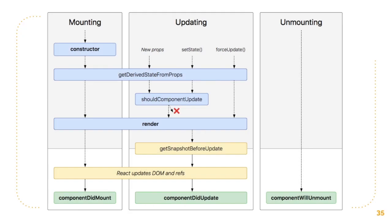There's a very good graph shown over here explaining a flowchart which explains clearly how these components work, what their lifecycle is, and when each of the component lifecycle methods get executed. If you check, the first stage is mounting, the second is updating, and the third is unmounting.